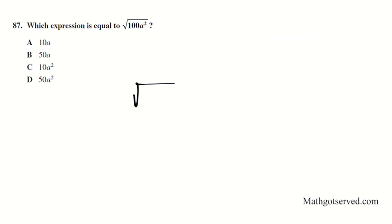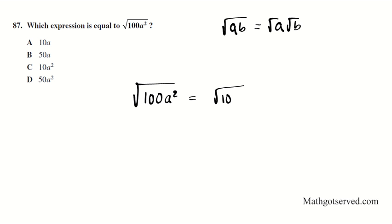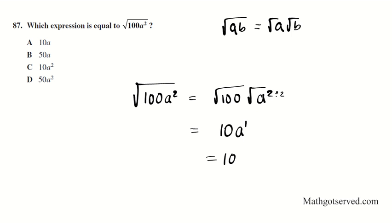Let's move on to question 87: which expression is equal to the square root of 100a squared? Using the property of radicals — square root of ab equals square root of a times square root of b — we split this into the square root of 100 times the square root of a squared. The square root of 100 is 10. For a squared, taking the square root divides the power by 2, giving a to the 1st, which we just write as a. So the answer is 10a — question 87 is option A.